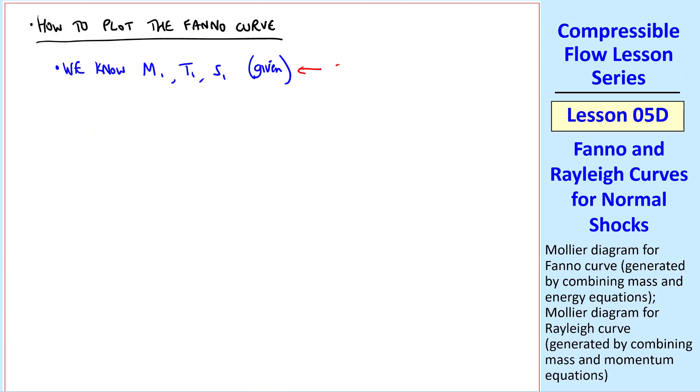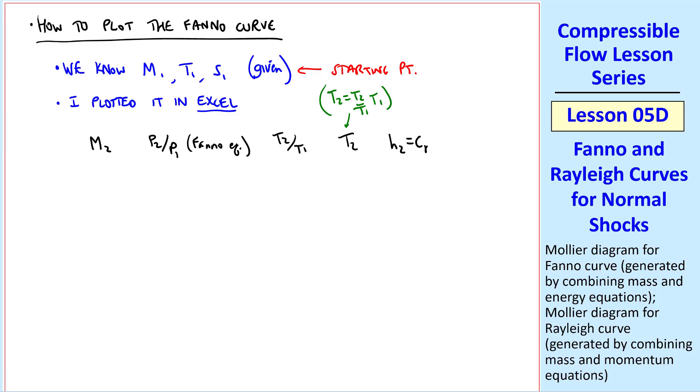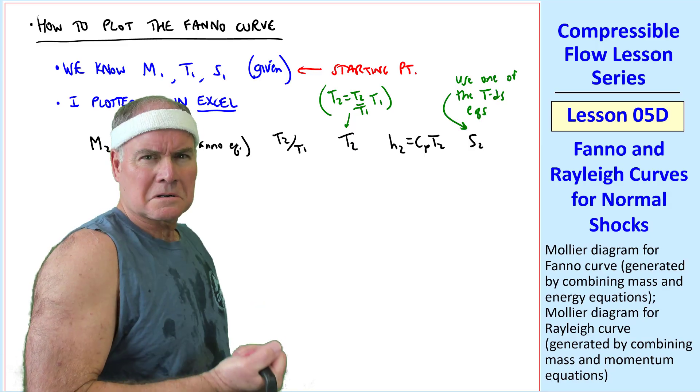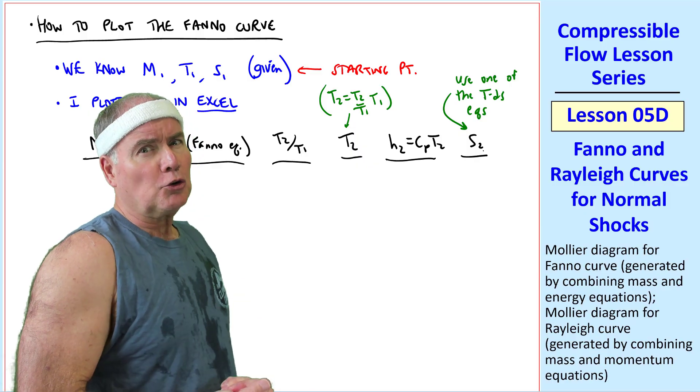So let's let this be our starting point. You can use whatever software you want, but I did my plot in Excel. For this given starting point, I created columns of M2, P2 over P1 from our Fanno equation, T2 over T1, from which we easily get T2. T2 equals T2 over T1 times T1. H2 is just CPT2, and S2, where we use one of the TDS equations, whichever one works out for you.